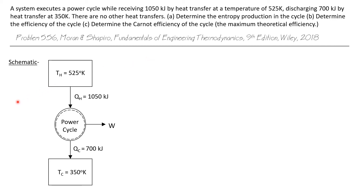Here's the schematic of this power cycle. We have a high temperature reservoir at 525 kelvin transferring 1050 kilojoules into the power cycle via heat transfer. The power cycle uses this energy to produce work, and what it cannot use to produce work it rejects to the cold reservoir operating at 350 kelvin. Our first problem is to calculate the entropy production during this cycle.